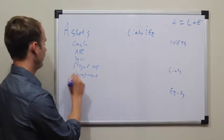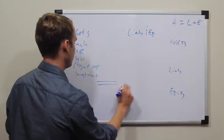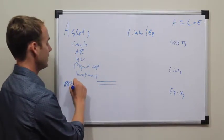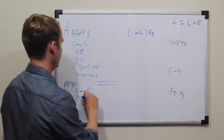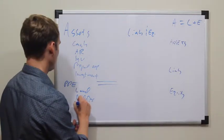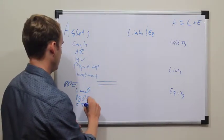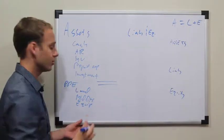Coming into property, plant, and equipment, this will have a total here, PPE. You're going to have things like land, building, equipment, minus accumulated depreciation.